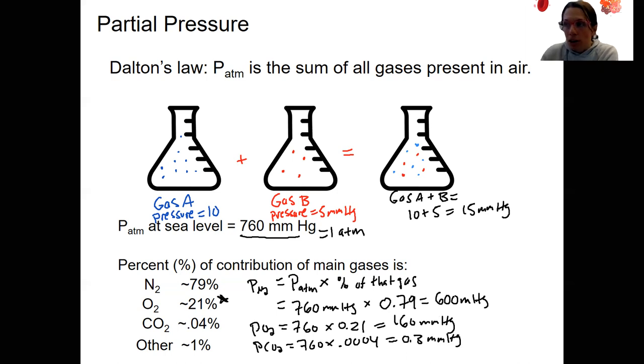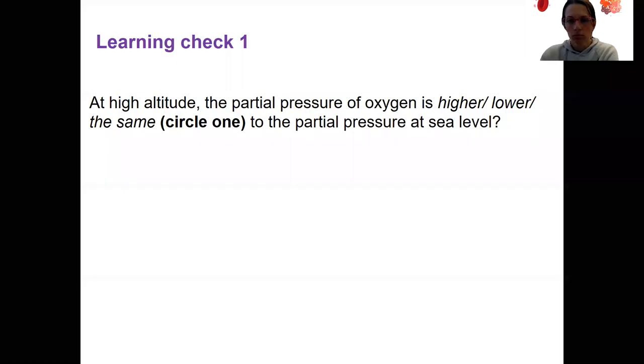You don't need to memorize all of these numbers, but you are going to want to know this one because we're going to be looking closely at the partial pressure of oxygen throughout circulation in the alveoli, so this will be a nice reference to have.